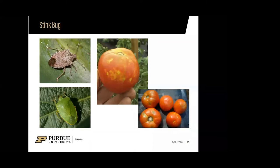Another common pest is the stink bug, which does quite a bit of damage to tomatoes. Sometimes people get confused — even when people bring tomatoes to my office I have to give it a second thought — because it can look like a virus issue. But when we see yellow pitting or coring in the fruit, that's a sign that a stink bug has been feeding on it.